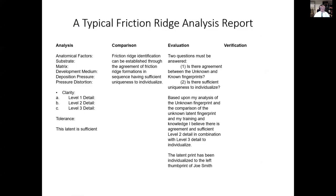This leads to your typical friction-ridge analysis report: analysis, anatomical factors, substrate matrix, development medium, deposition pressure, pressure distortion, description of clarity, tolerances. And then there's usually a statement of belief — 'the latent is sufficient' — without any information on how you determined that or what you base it on. We just have to take the examiner's word for it. Then we get to the comparison phase, and there might be something describing the process, but we don't know anything specific to the actual latent print that was analyzed.